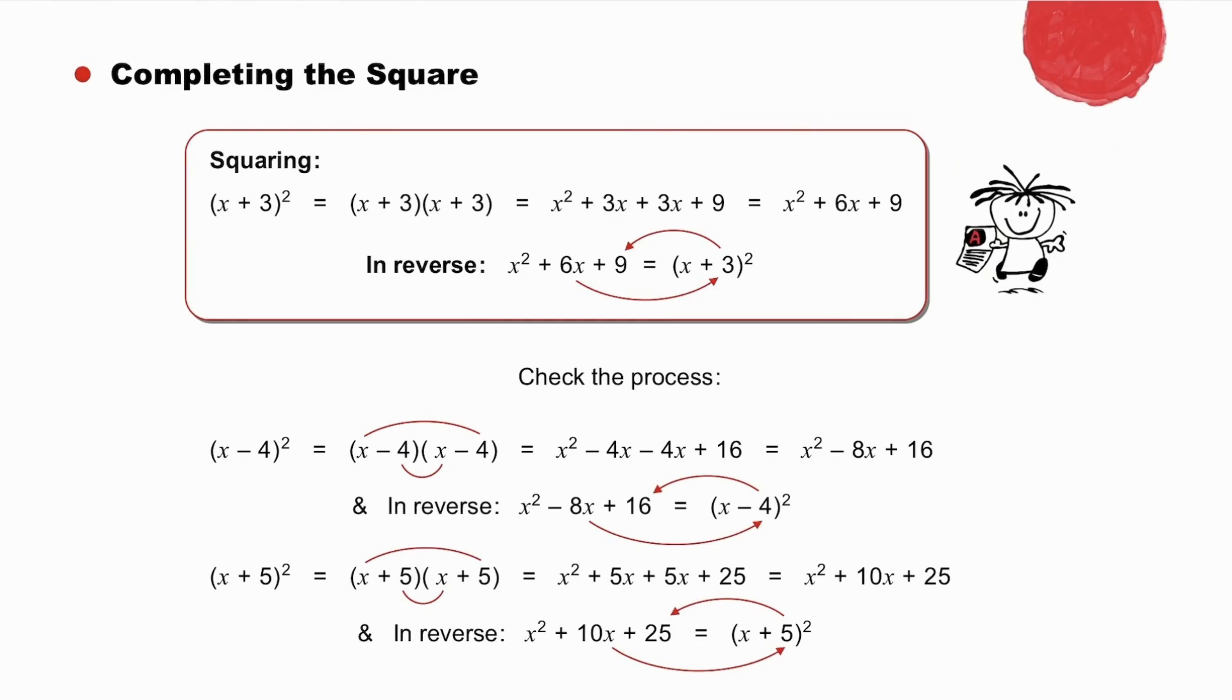Now pause to check the process. When squaring (x - 4), -4x occurred twice, therefore double -4x gives us -8x, and 4² gives us 16. Similarly, the square of (x + 5), 5x + 5x is 10x, double 5x, and 5² is 25.